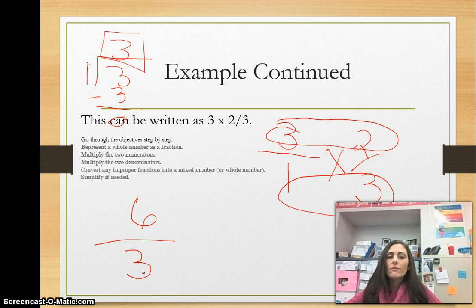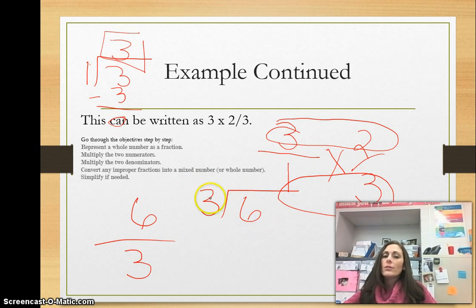Now it says convert any improper fractions into a mixed number or a whole number. So that means we're going to need to take the denominator, which is three, into the numerator. And three goes into six two times.